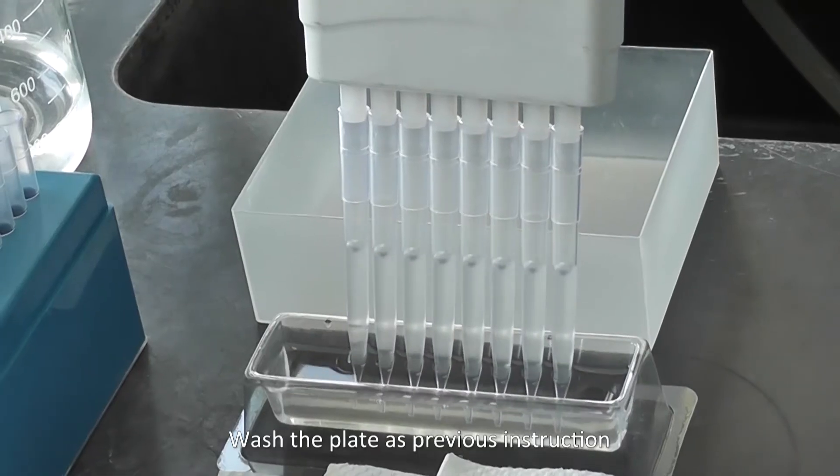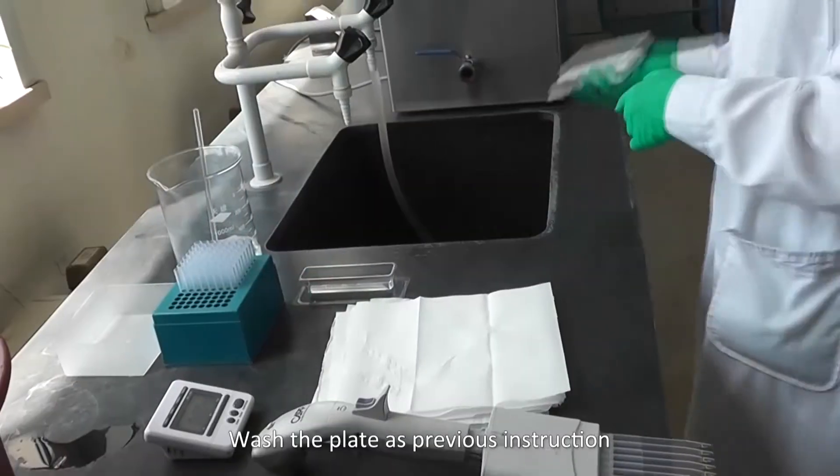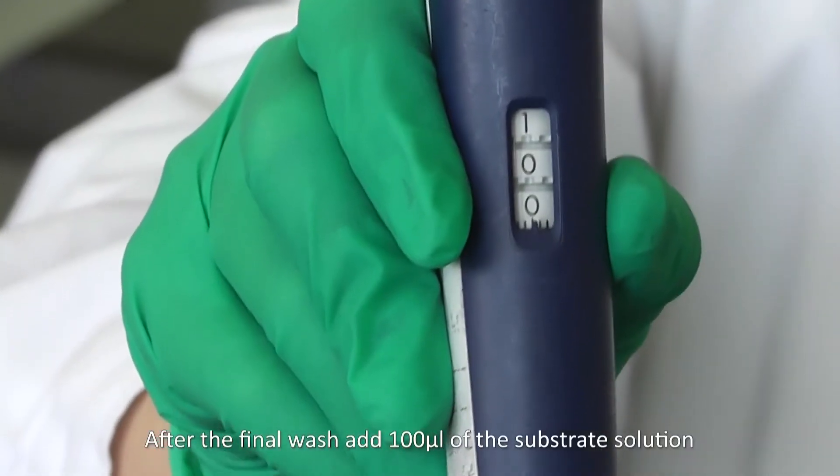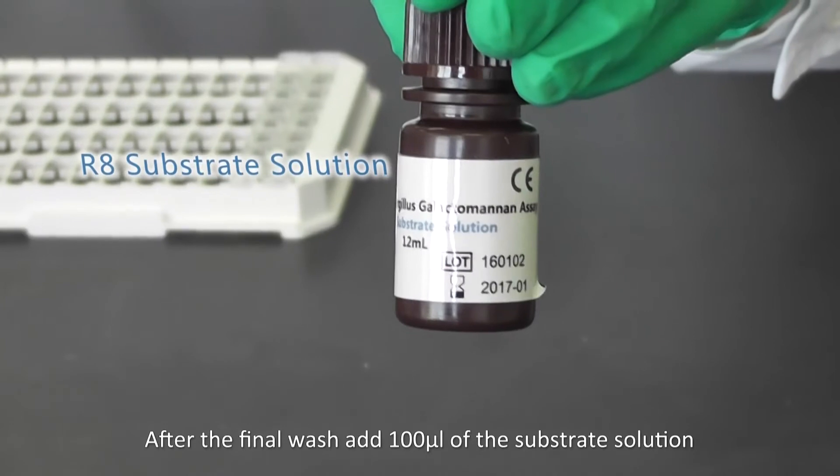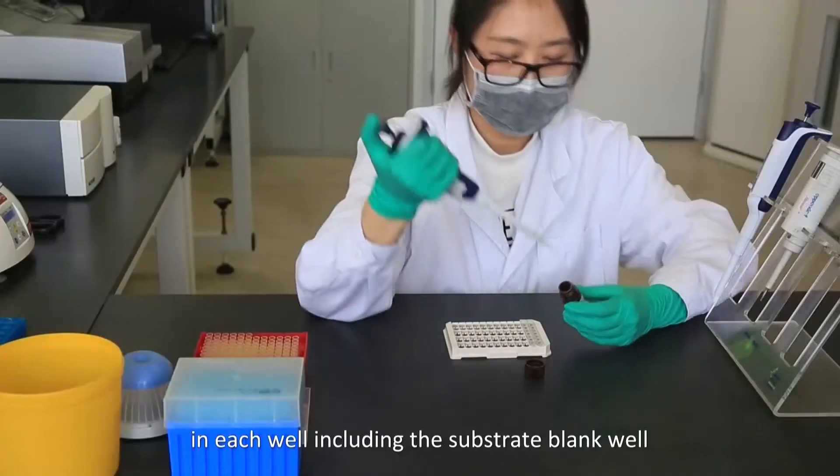Wash the plate as previous instruction. After the final wash, add 100 microliters of substrate solution in each well, including the substrate blank well.